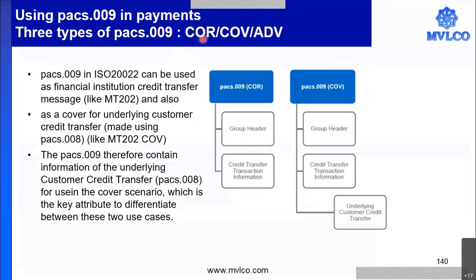The three types are: PAX009 core, PAX009 cover, and PAX009 advice. I will explain each one of them and we will have a look at how they flow. The PAX009 can be used as a financial institution credit transfer like an MT202, MT205, MT200 or MT201. It can also be used as a cover, like the MT202 cover or MT205 cover. And additionally, we are going to have a PAX009 advice.